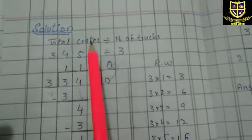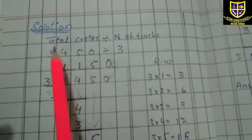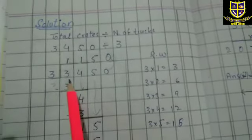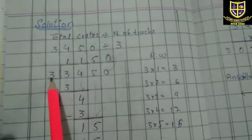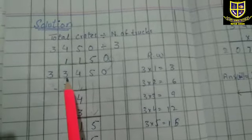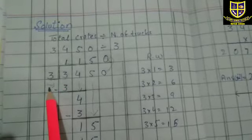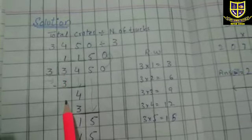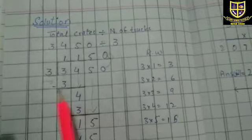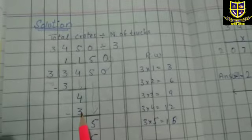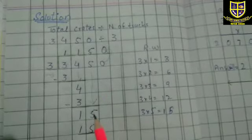Solution: total crates divided by number of trucks — 3450 divided by 3۔ 3450 اندر لکھیں گے اور 3 جو divisor ہے باہر ہوگا۔ Division left side سے start کرتے ہیں۔ Left side پر پہلا number لیں — three کا table پڑھو کہ 3 آ جائے: three one's are three، minus ہوگا تو zero آ گیا۔ Next number four — three one's are three، four minus three = one۔